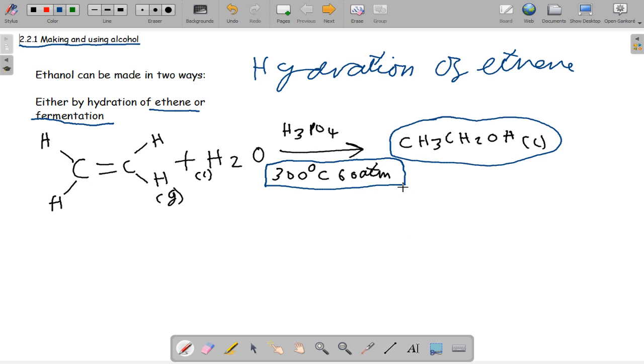The reaction is entirely reversible, so conversion of ethene is usually incomplete. Each time the reagents pass through the reactor, only 5% of the ethene is converted into ethanol. All the over-reacting gases are then recycled and put back into the reaction at the start. I'll put another arrow there to indicate it is reversible.